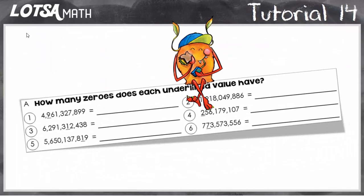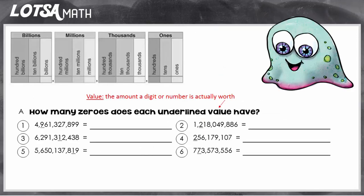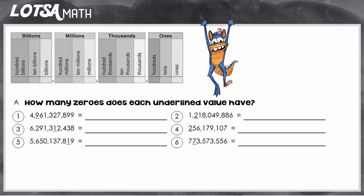For these types of questions, you need to figure out how many zeros each value has. So how many zeros does each underlined value have? Remember, the value is the amount the digit is actually worth. So how many zeros are in that value? Let's try some examples together.